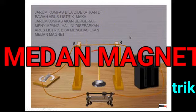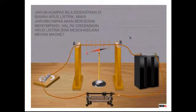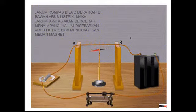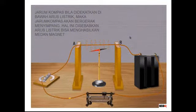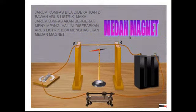Assalamualaikum warahmatullahi wabarakatuh. Jarum kompas bila didekatkan di bawah arus listrik, maka jarum kompas akan bergerak menyimpang. Hal ini disebabkan arus listrik bisa menghasilkan medan magnet. Di video ini, anak-anakku semuanya khususnya kelas 9, akan saya ajak belajar tentang medan magnet.